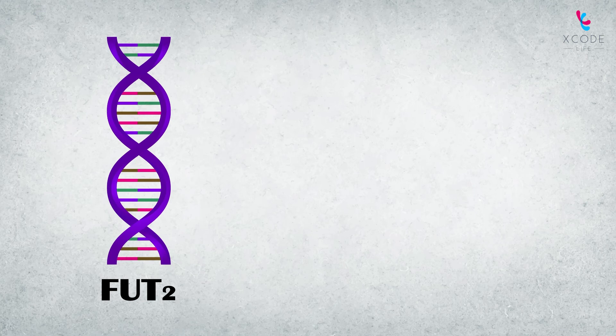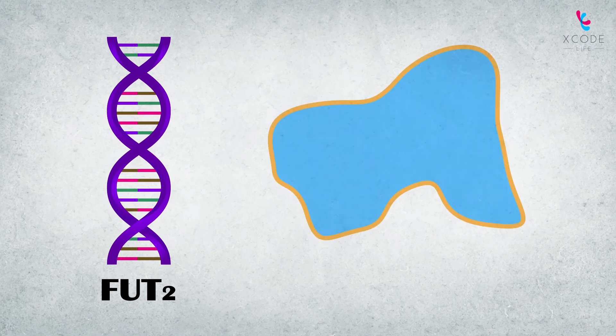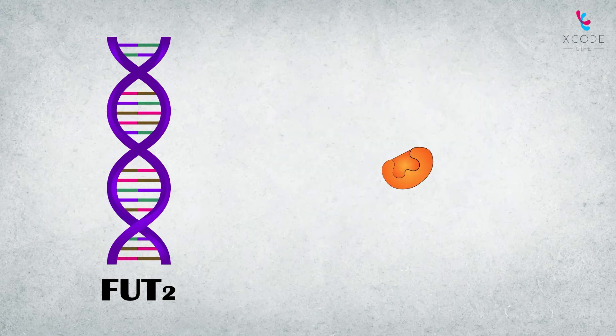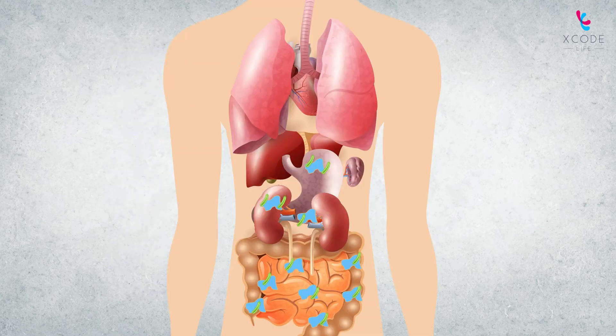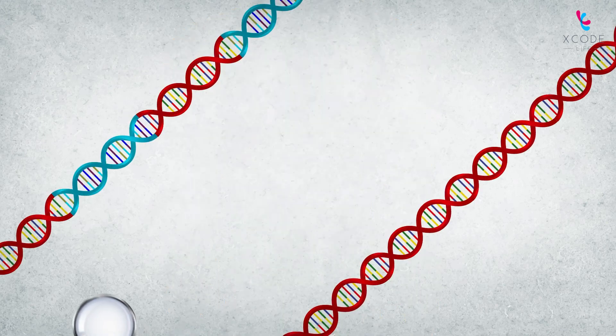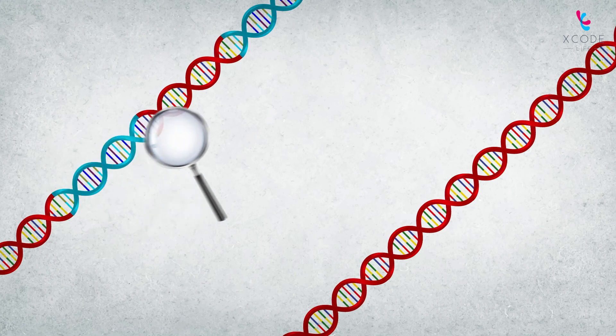FUT2 is yet another important gene that influences the absorption of vitamin B12 in the body. FUT2 contains information to produce an enzyme that is necessary for the attachment of a harmful bacteria called Helicobacter pylori to the digestive tract. This bacteria impairs the absorption of vitamin B12 from food.